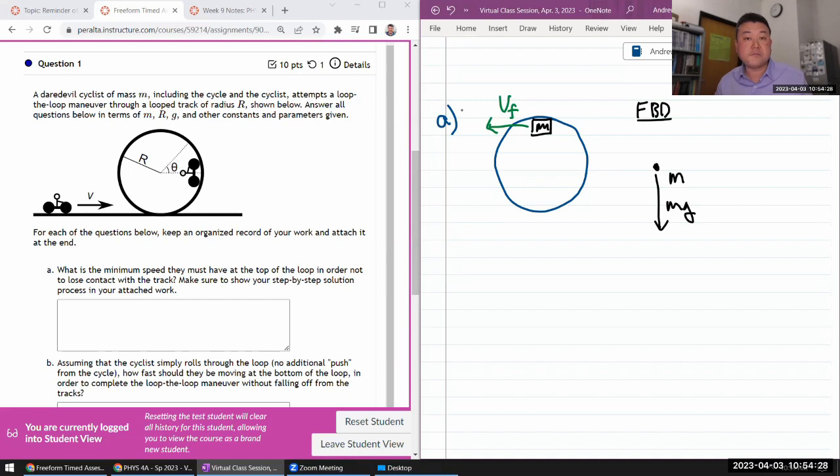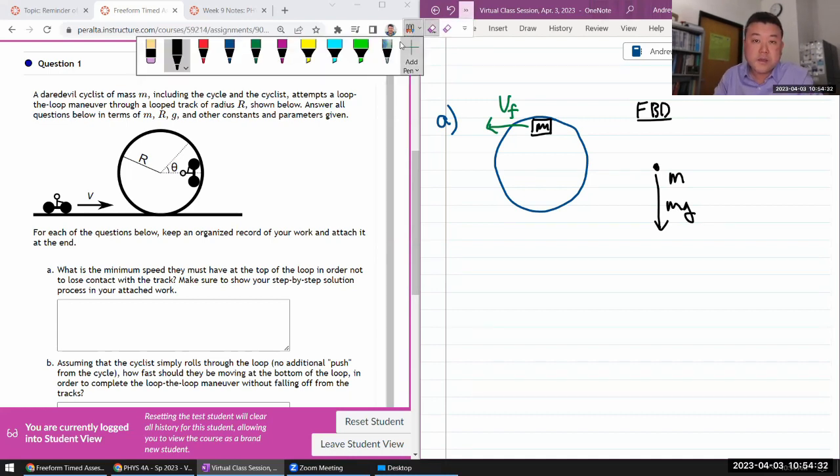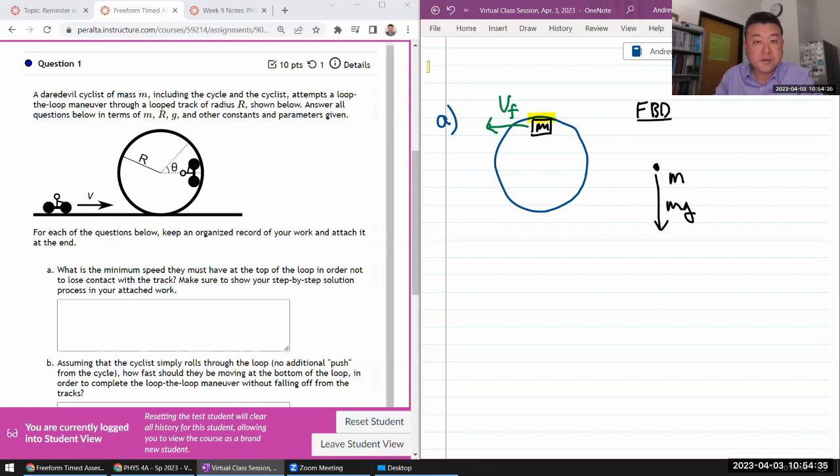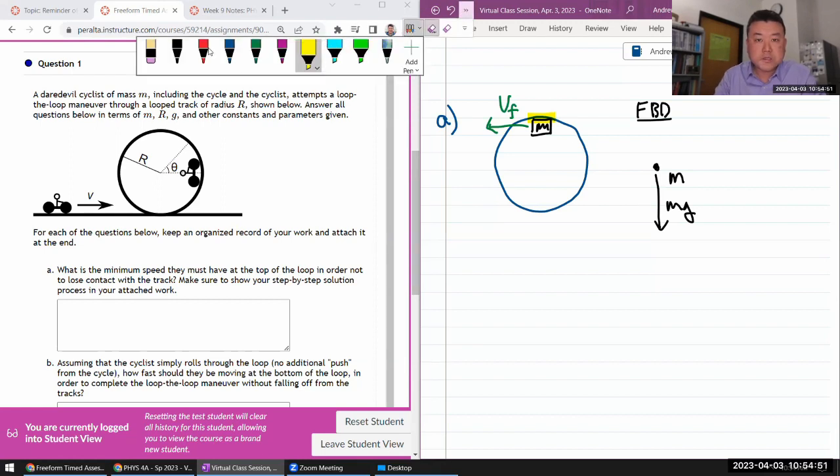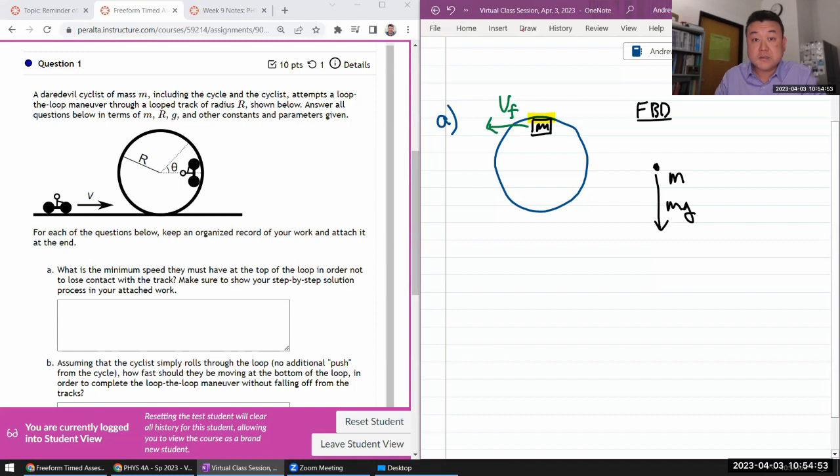So on this free body diagram, I'm going to have gravity. There's always gravity. And if you're thinking through any other force, the only thing else that's touching them is the track. And any surface of contact can exert two forces, normal force or friction. Here, let's make things easy. Let's say it's frictionless. So there must be normal force.